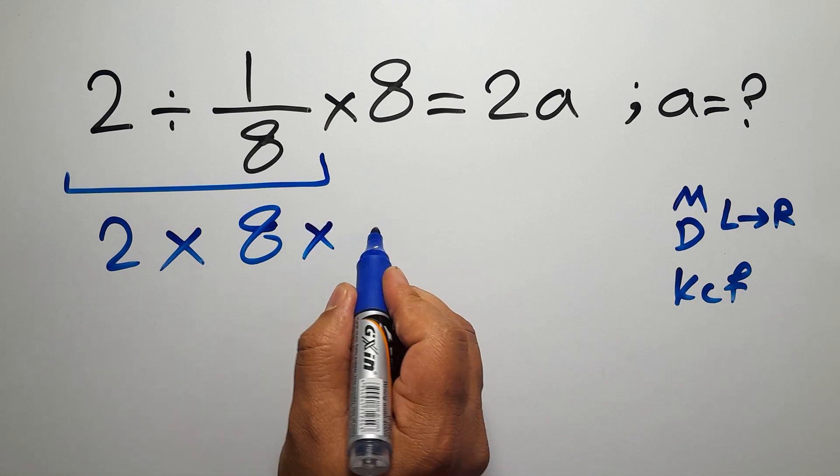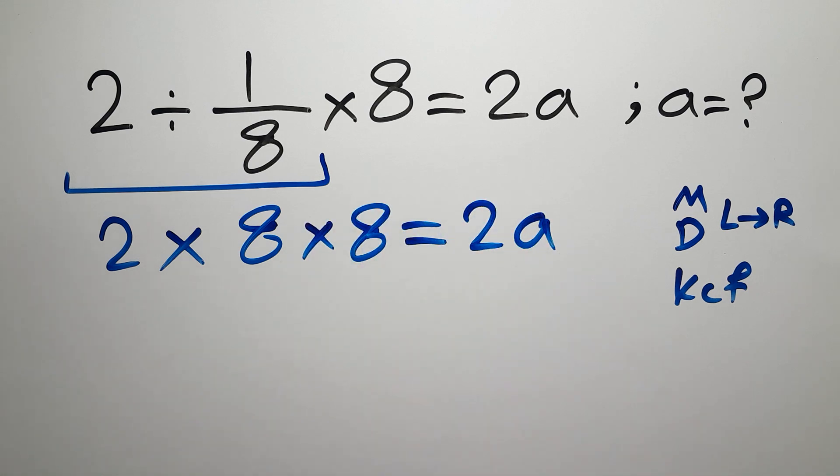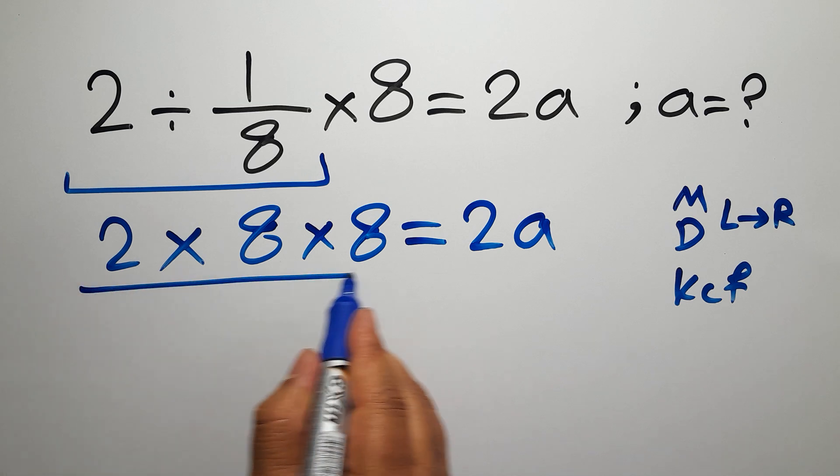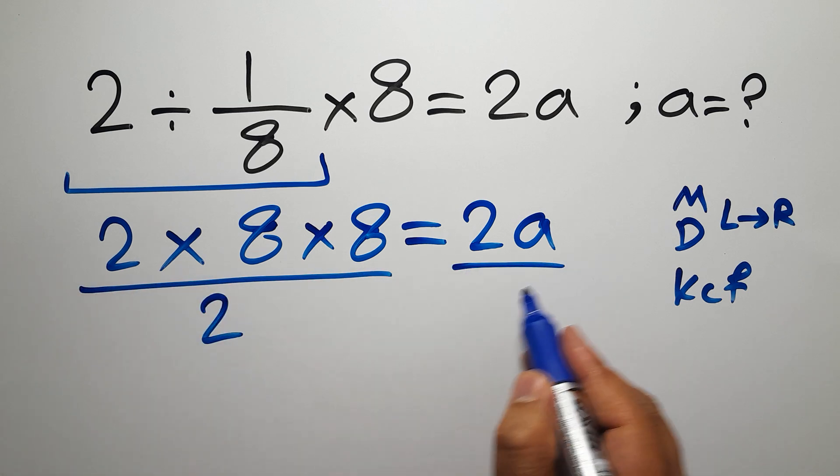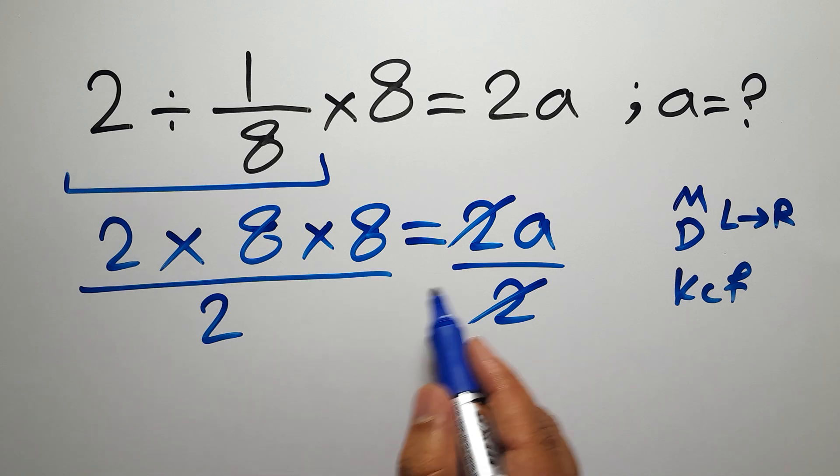and again times 8 equals 2a. Now, let's divide both sides by 2. These 2 and these 2 can cancel each other out. So on the right-hand side, we have just a.